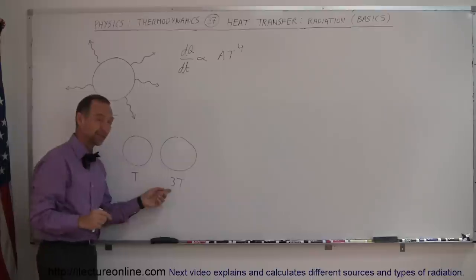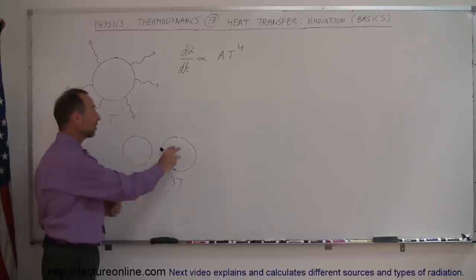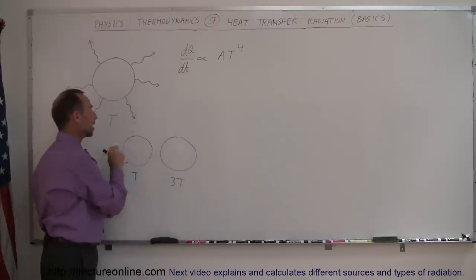Well, 3T to the fourth power, 3 to the fourth power is 81. That means this object will radiate out 81 times as much heat as this one.